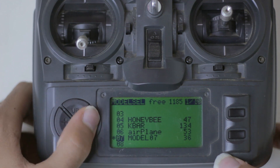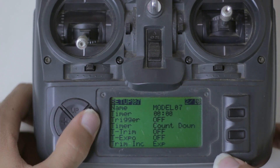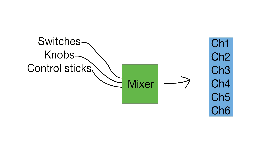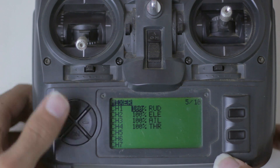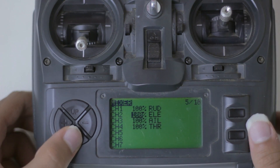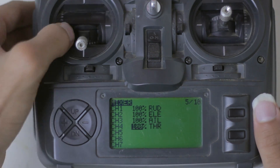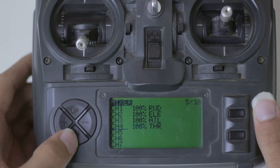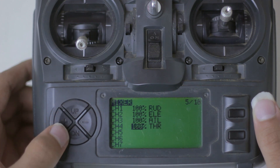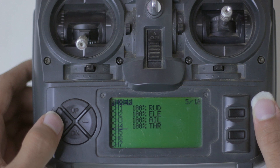All you need to know about right now is the mixer. The mixer in its most basic form is what assigns every single control to a specific channel. For example, channel 1 is rudder, channel 2 is elevator, channel 3 is aileron, and channel 4 is throttle. You could easily change it so that throttle is channel 1, or aileron is channel 2 — you can do whatever you want here.